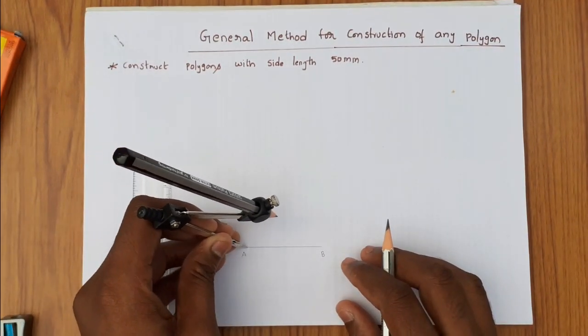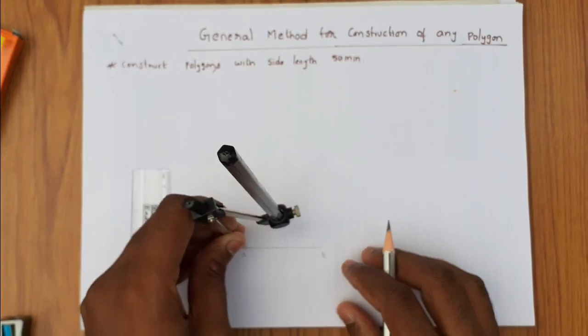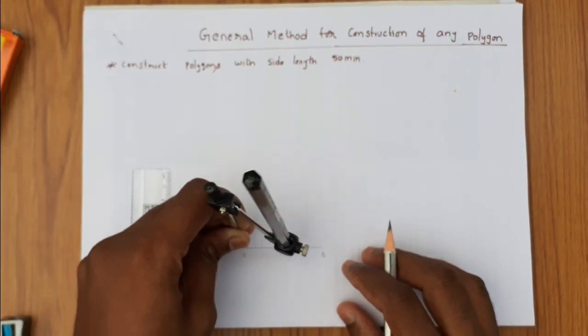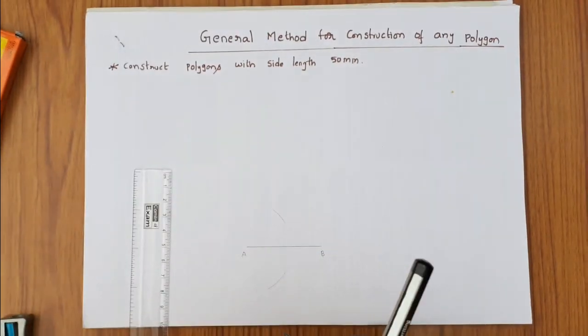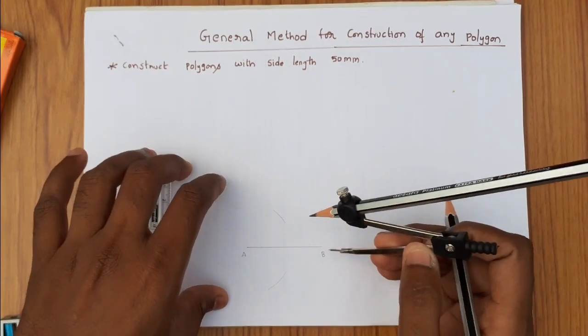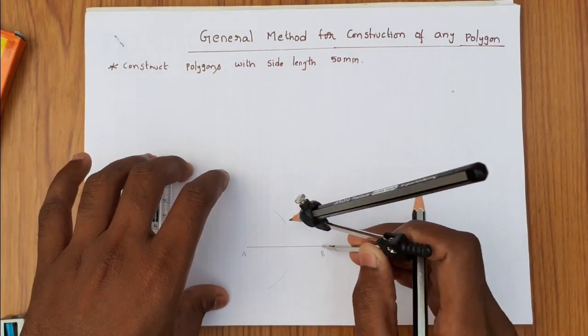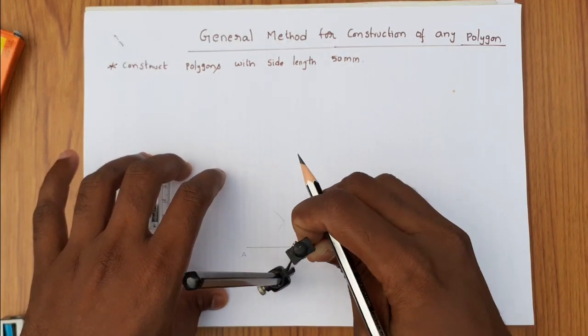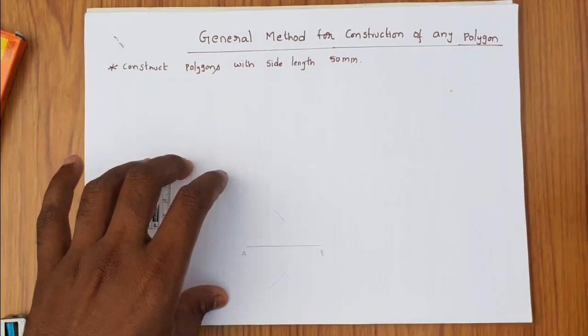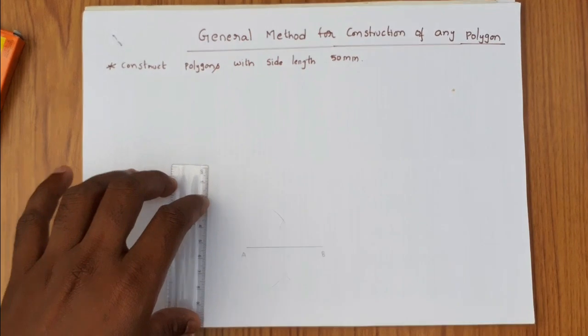Now bisect the line AB. Take more than half of the AB radius, with A as center draw an arc, similarly with B as center cut those arcs. Finally, AB is bisected.